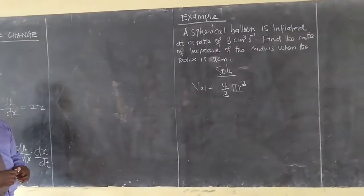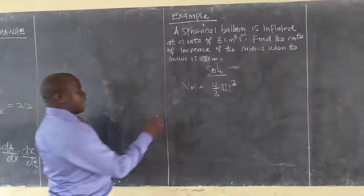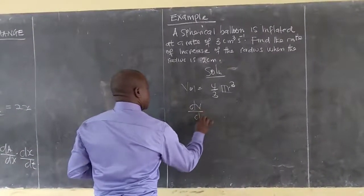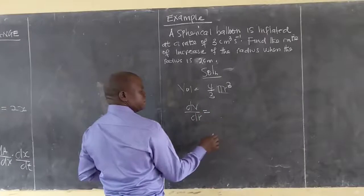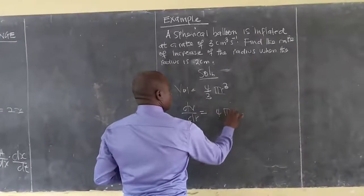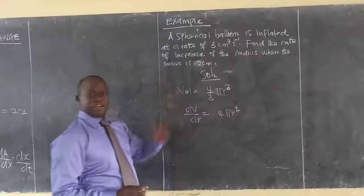We are running as a spherical balloon. Therefore, I can get dV/dr which gives me now 4 pi r squared. So we have simple differentiation here.